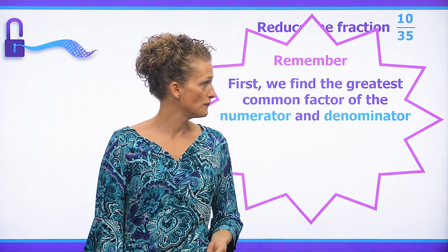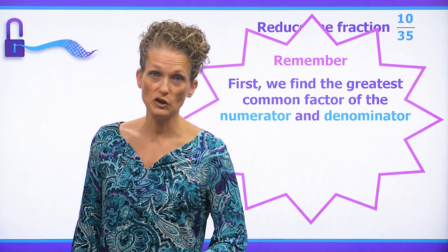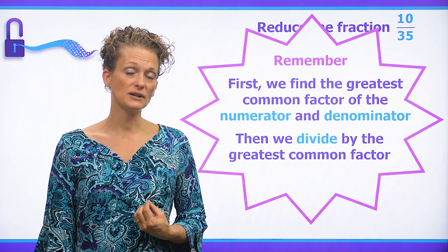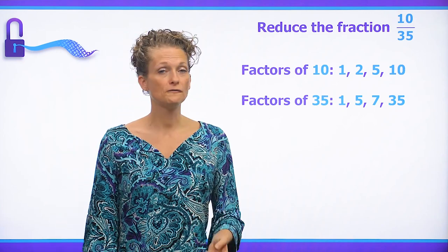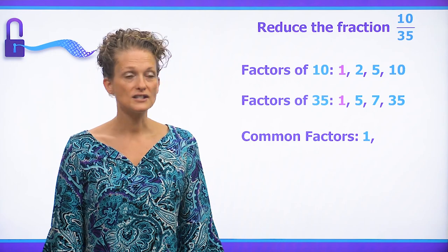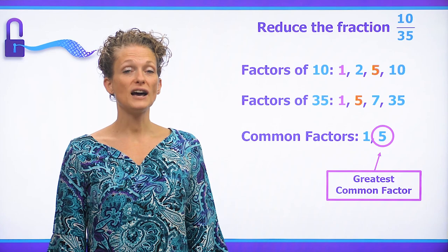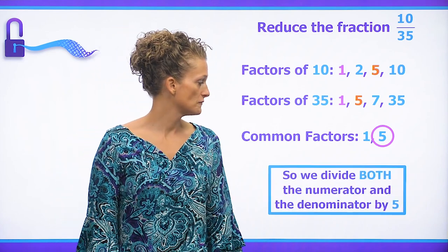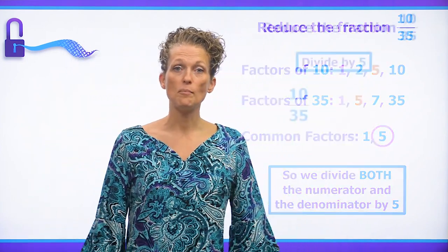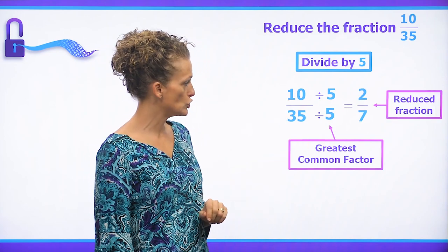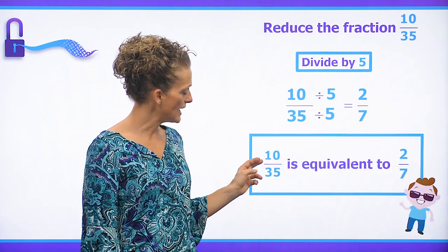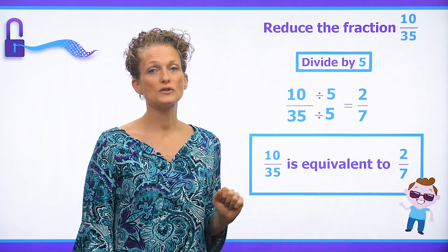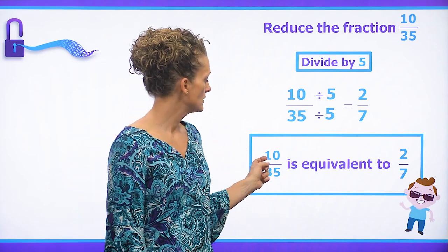Now let's reduce 10 over 35. We want to find the greatest common factor between the numerator and the denominator, then divide both by it. The factors of 10 are 1, 2, 5, and 10. The factors of 35 are 1, 5, 7, and 35. The common factors are simply 1 and 5, so 5 is the greatest common factor. Ten divided by 5 gives us 2, and 35 divided by 5 gives us 7. So 2 over 7 is our reduced fraction — 10 over 35 is equivalent to 2 over 7, and that is as simple as it will go. That is your lesson on simplifying fractions.